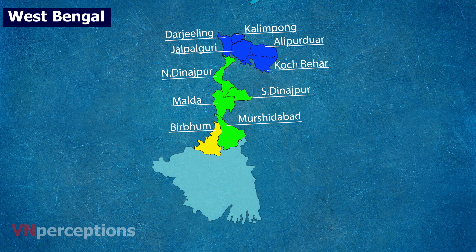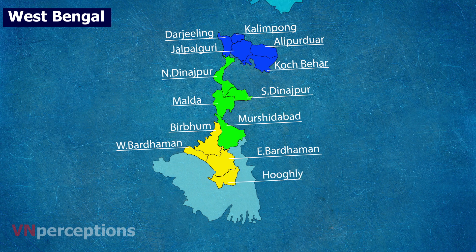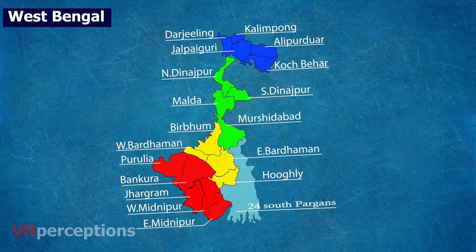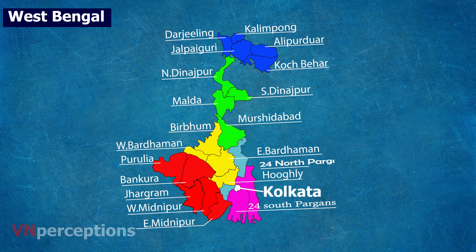Birbhum, West Bardhaman, East Bardhaman and Hooghly come in the Burdwan division. Then Purulia, Bankura, Jhargram, West Medinipur and East Medinipur come in the Medinipur division. Then 24 South Parganas, 24 North Parganas, Kolkata, Howrah and Nadia come in the Presidency division.